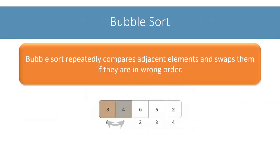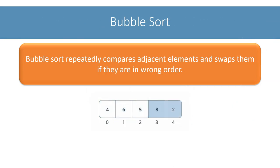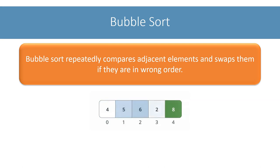To summarize, in bubble sort we repeatedly compare adjacent elements and swap them if they are in wrong order. Bubble sort is a simpler algorithm to learn in that its steps can be translated into code one to one. We will now switch to BlueJay and see the bubble sort Java program.